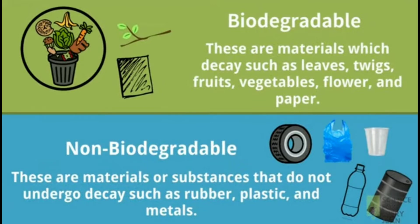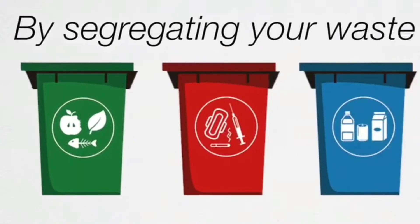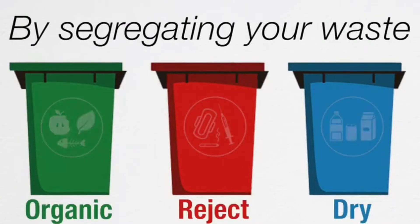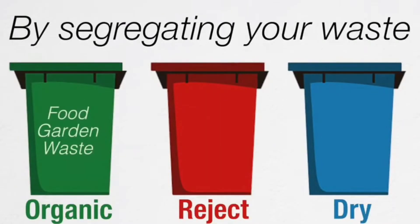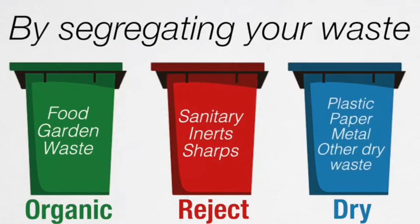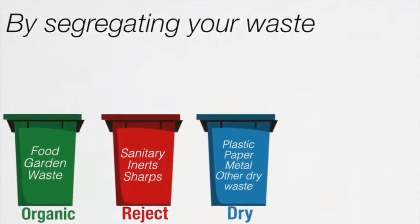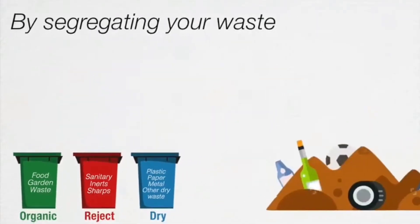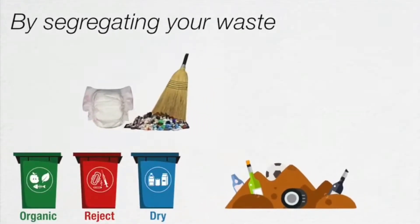fruits, vegetables, flowers, and papers. And non-biodegradable — these are materials or substances that do not undergo decay, such as rubber, plastic, and metals. By segregating your waste, we also have three colors: green stands for organic, red is for reject, and lastly blue for dry.